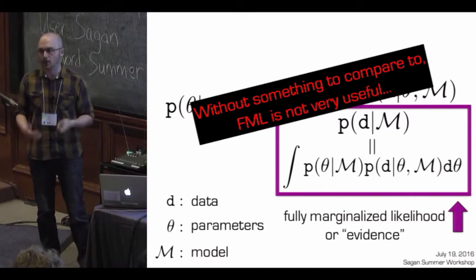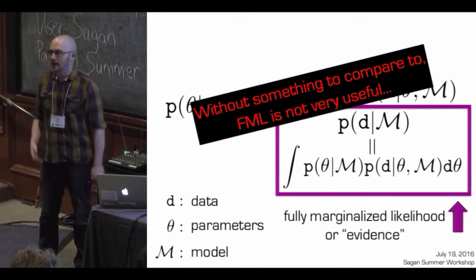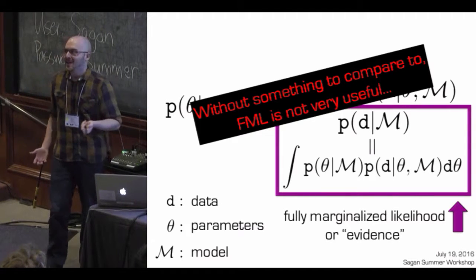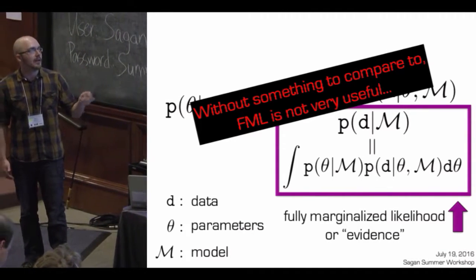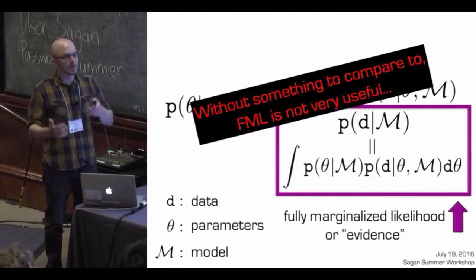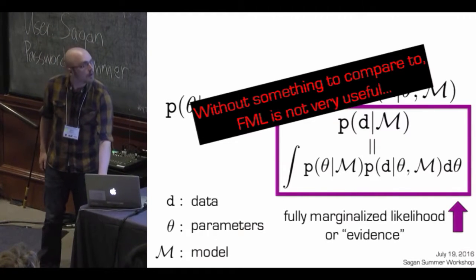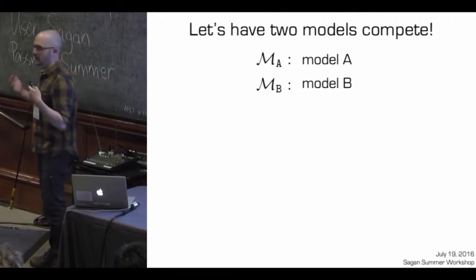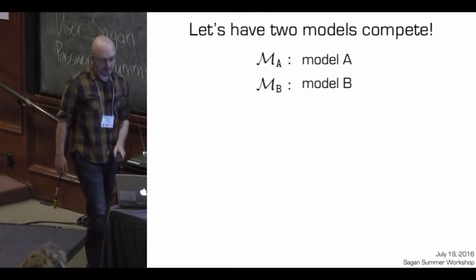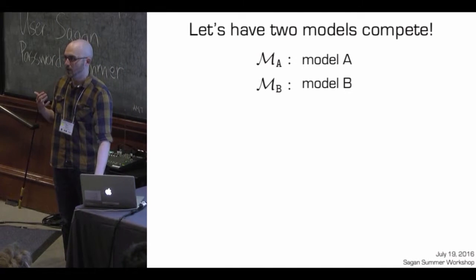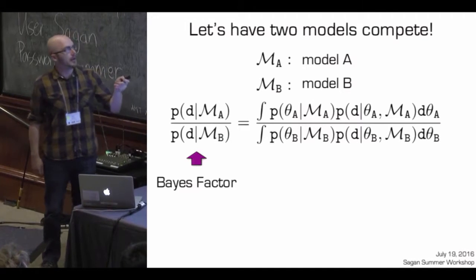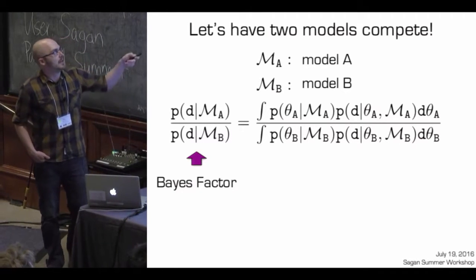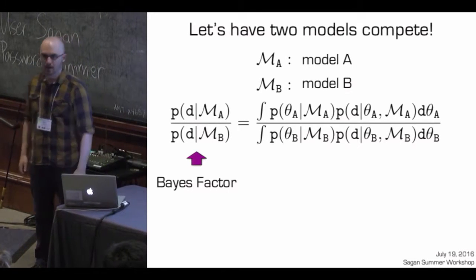Unfortunately, computing this on its own isn't very useful. If I do this integral and get a number like 10 to the minus 10 — well, what do I do with that? Is that good or bad? There are theoretically an infinite number of models we could apply. So rather than consider infinite models, let's consider just two — model A and model B. I can compute the probability of each by integrating over theta A and theta B respectively, and the ratio of these probabilities is called a Bayes factor. Additionally, we can place priors on the models themselves, and multiplying the Bayes factor by the ratio of model priors gives the posterior odds ratio.